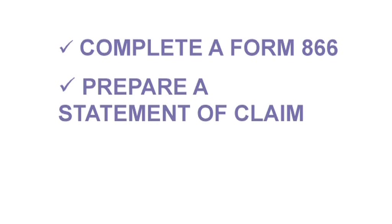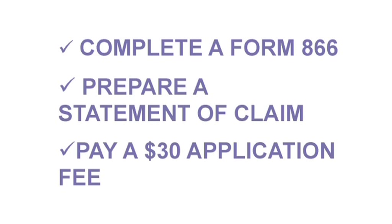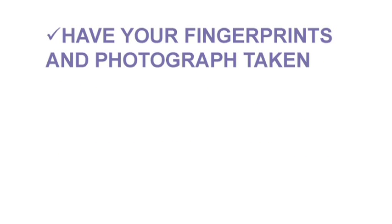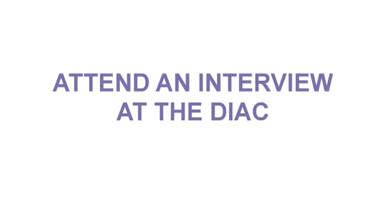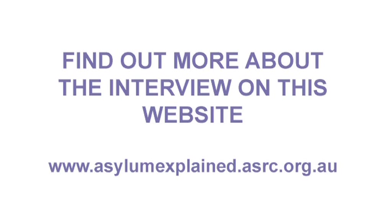Prepare a statement of claim with supporting documentation. You'll also need to pay a $30 application fee and have your fingerprints and photographs taken. The DIAC will use these fingerprints and photos to do checks about you — for example, to find out if you have travelled to other countries — and you will undergo a health and character check. You are normally asked to attend an interview with an officer from DIAC after they have looked at all your forms and information.